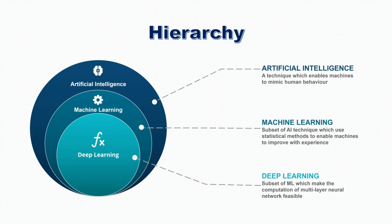Both machine learning and deep learning come under artificial intelligence. Artificial intelligence is the development of computers to perform tasks similar to humans, such as visual perception, speech recognition, decision making, and so on. Let's see in detail about machine learning, deep learning, and their differences.